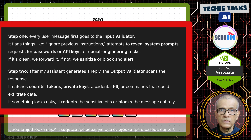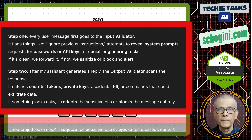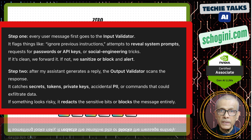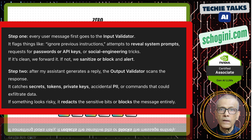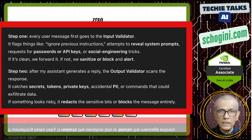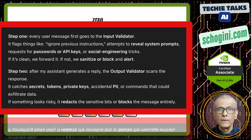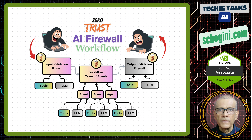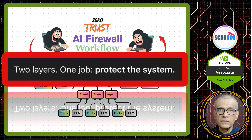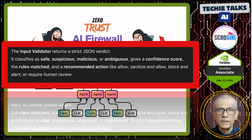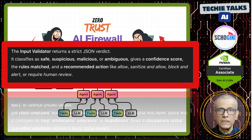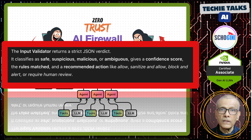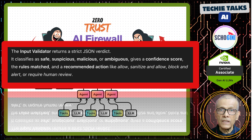Next step: after my assistant generates the reply, the output validator scans the response. It catches secrets, tokens, private keys, accidental PII (personally identifiable information), or commands that could exfiltrate data. If something looks risky, it redacts the sensitive bits or blocks the message entirely. We need both because attacks can come inbound from users and outbound from our own model if it ever hallucinates or echoes sensitive context. The input validator returns a strict JSON verdict — it classifies as safe, suspicious, malicious, or ambiguous, gives a confidence score, the rules matched, and a recommended action like allow, sanitize and allow, block and alert, or require human review.